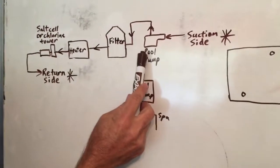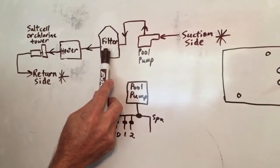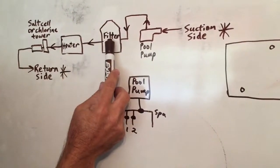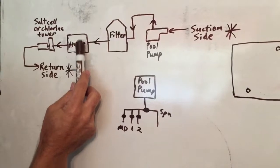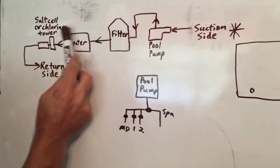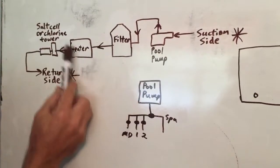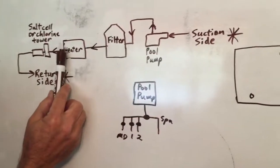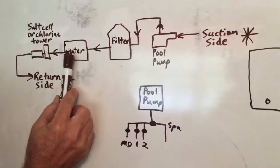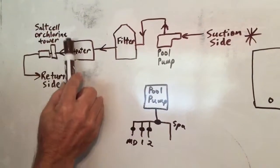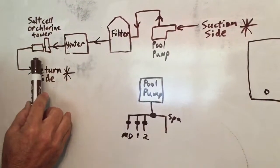So it comes into the pool pump out the top, comes to the filter, it cleans it. And then that clean water, it sends to a heater. If there is a heater on the system, there's not always a heater on the system, but if there is one, it's going to come directly out of the filter and go into the heater. And then you can see it come out of the heater.